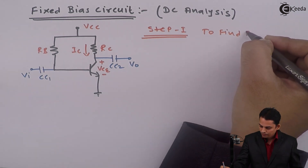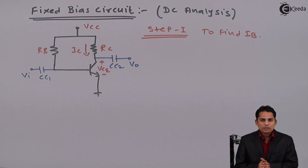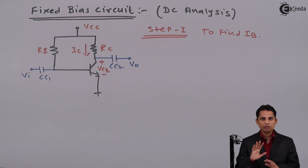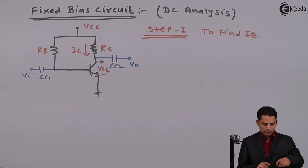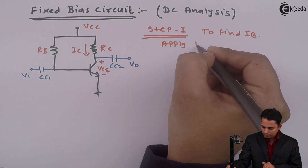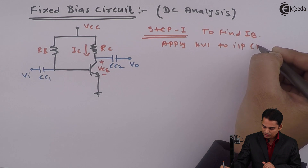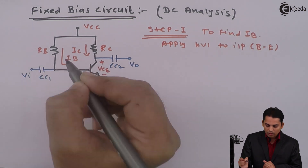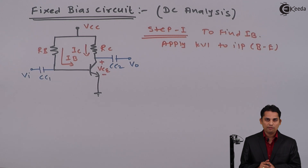We will apply step one to find IB. The methods to find IB, IC and VCE will remain the same. In step one, we will apply KVL to the input. In step two, we will find IC with the help of beta and input current. In step three, we will apply KVL to the output. We are trying to find out base current IB, which will come from the input loop, so we apply KVL to the input.